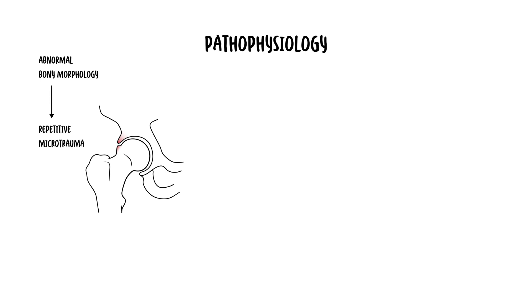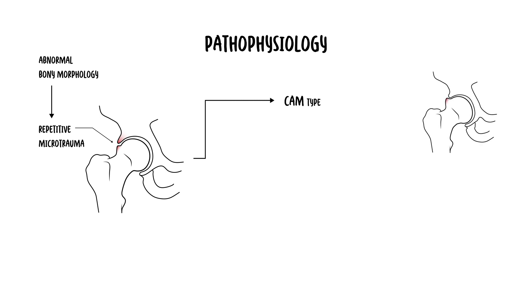Femoral acetabular impingement occurs due to abnormal bony morphology that leads to repetitive microtrauma at the femoral acetabular junction. There are two primary morphologies. A CAM-type lesion is an aspherical femoral head or a bony bump at the head-neck junction, which causes shear force on the acetabular cartilage and labrum during flexion and rotation of the hip.